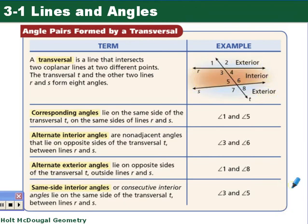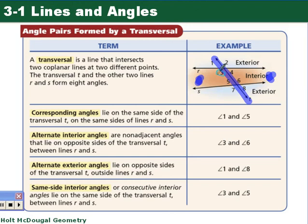We're going to go through angles associated with a transversal and two lines. The first set is corresponding angles — they lie on the same side of the transversal T, and the same relative position to lines R and S. For instance, angle 3 is in the same relative position as angle 7 and on the same side of the transversal, so those are corresponding angles.